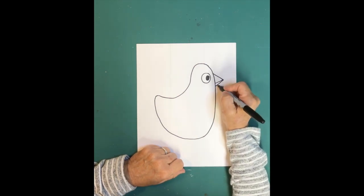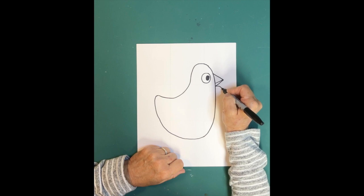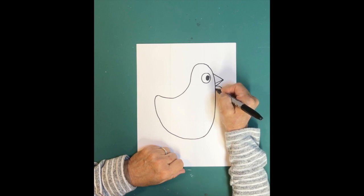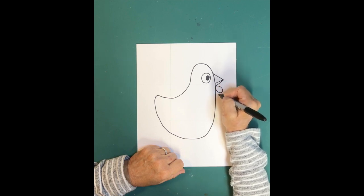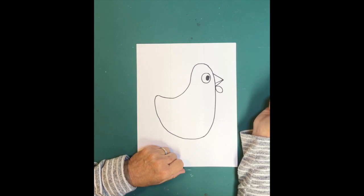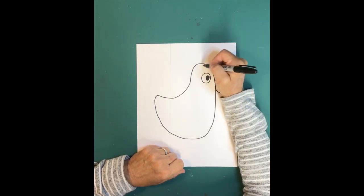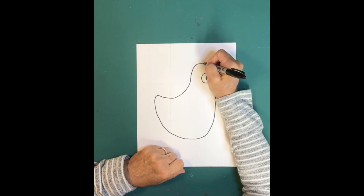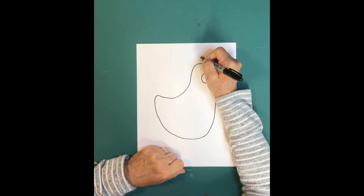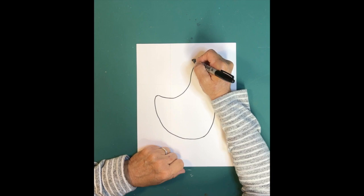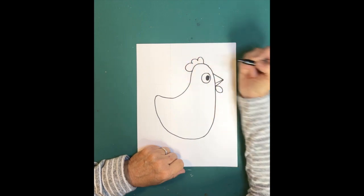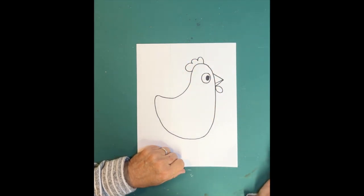Chickens have this extra little bit of skin right here, so we're just going to do like an oval underneath her beak. Then chickens have this really cute little crown on top of their heads, and you're just going to be making some lines that go like that, almost like a flower right on the top of her head.